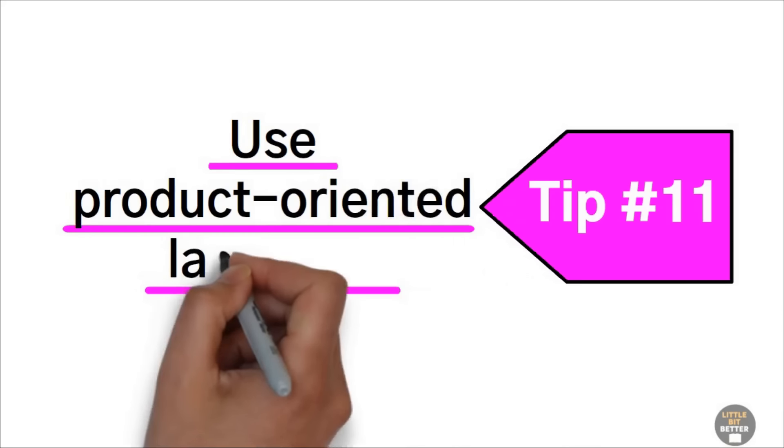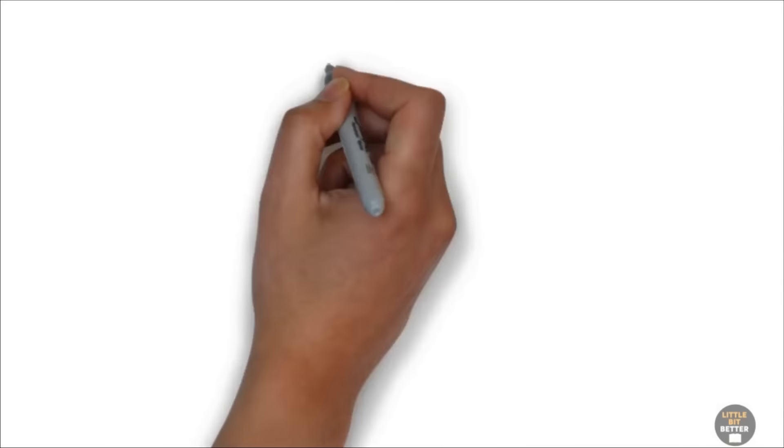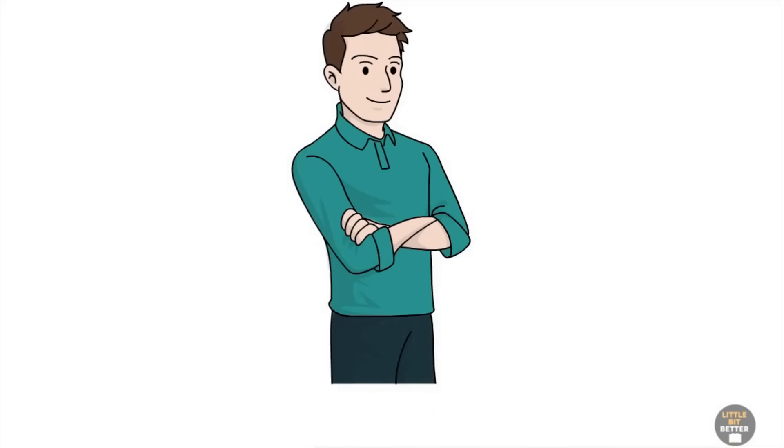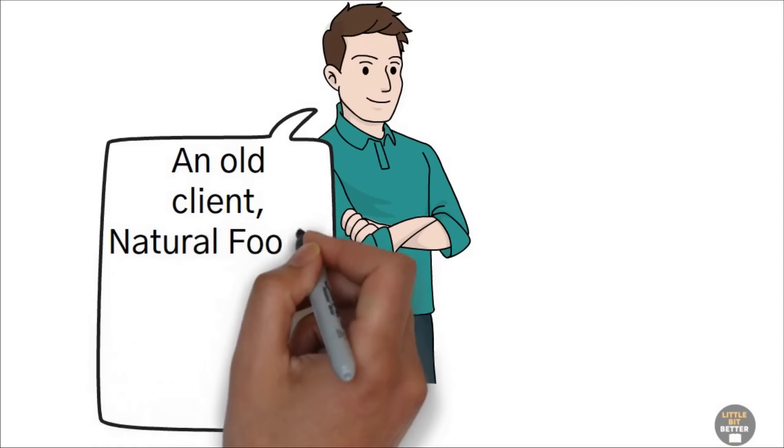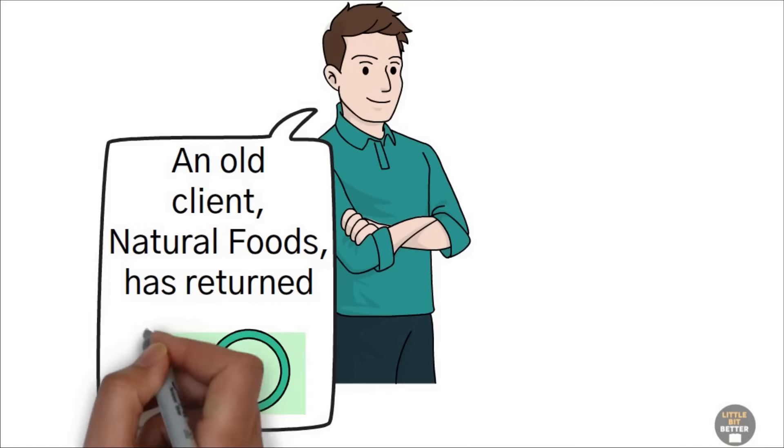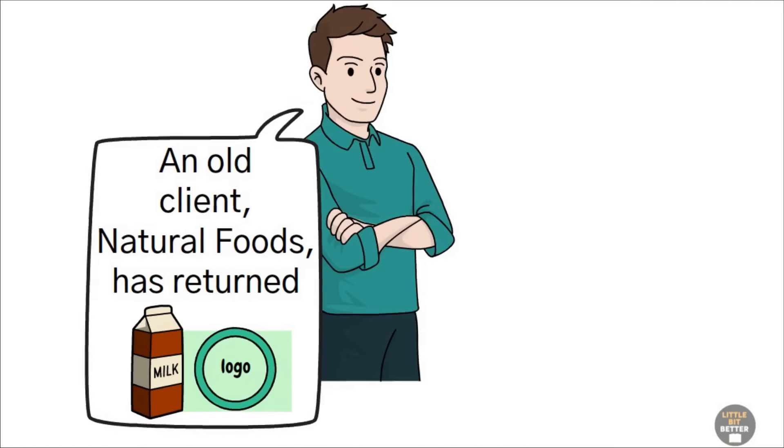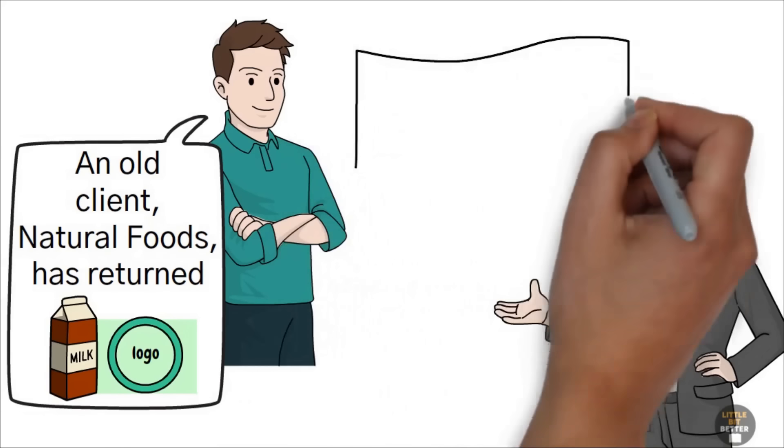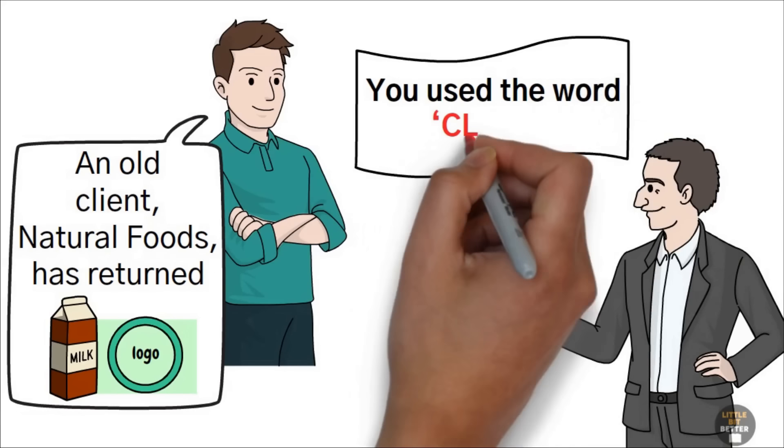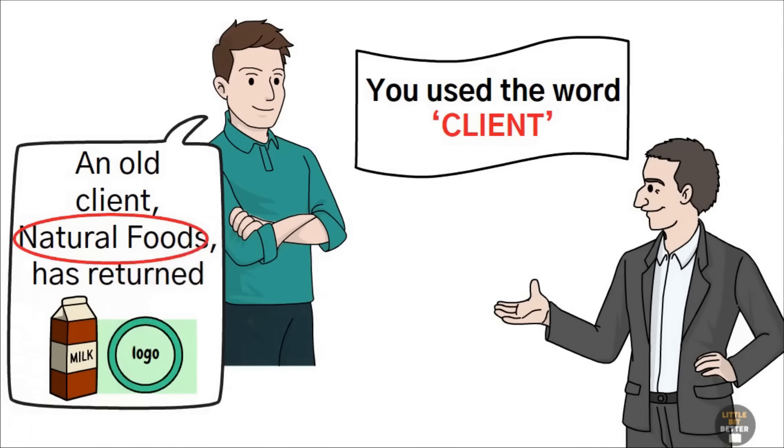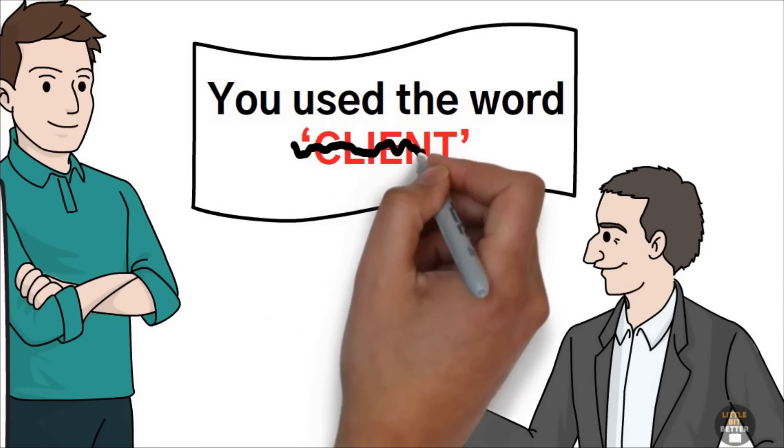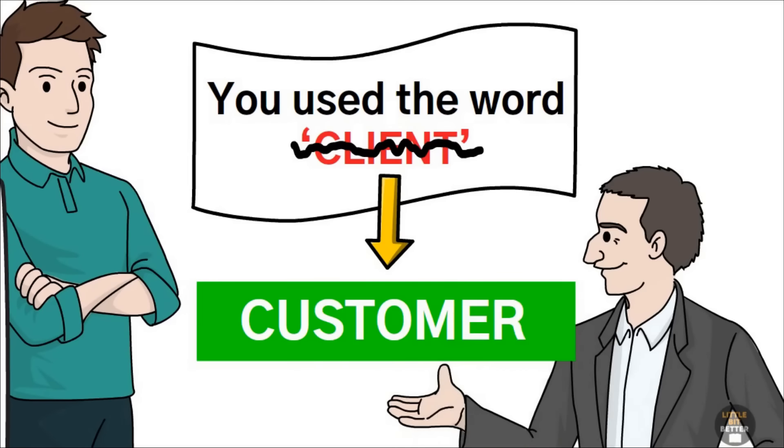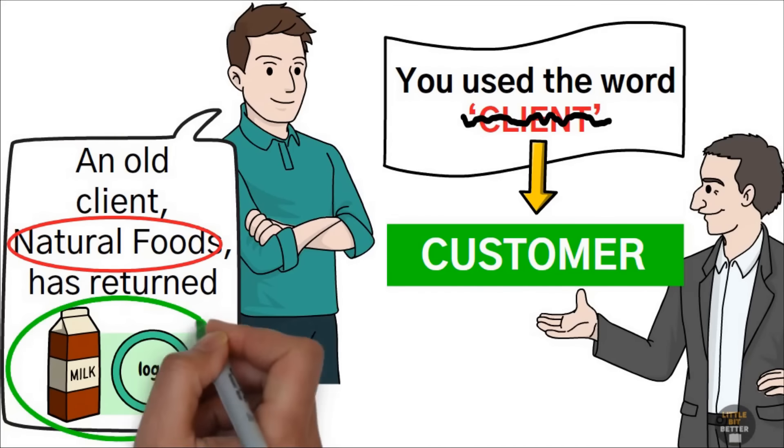Ted's tip number 11, use product-oriented language. In the next meeting, Alex reported that things were going quite well. An old client, Natural Foods, had returned for a logo for their line of organic chocolate milk. Ted, there's something I want you to think about. I noticed you used the word client to describe Natural Foods. I want you to replace the word client with the word customer when you talk about the companies that buy your logo process. Alex, why does that matter?